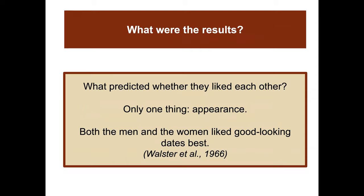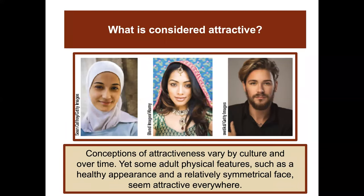The results: only one thing predicted whether they liked each other — appearance. Both men and women liked the good-looking dates best. Conceptions of attractiveness vary by culture and over time, yet some adult physical features, such as a healthy appearance and a relatively symmetrical face, seem attractive everywhere.